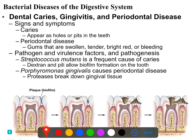Almost everyone has had a cavity at some point in their life by the time they reach adulthood. These are infections - bacteria that have made a hole in your barriers. In this case, your tooth forms a barrier between the pulp, which is the inner living tissue, and the outside world. Dental caries appear as holes or pits in the teeth.